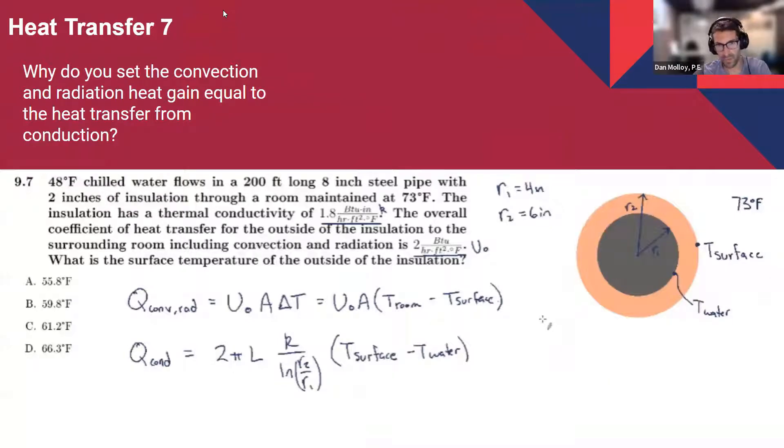First one, heat transfer seven. Why do you set the convection and radiation heat gain equal to the heat transfer from conduction? So I kind of snipped the beginning of the video as a way to give some context before diving into the solution here. I really just want to go over the setup for this problem.